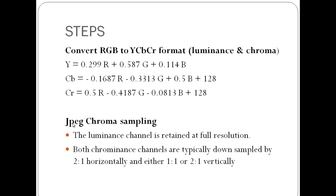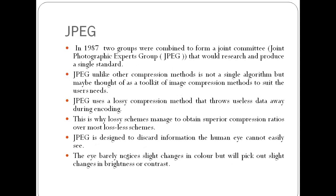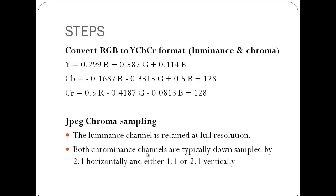Once this is done, we do the chroma sampling. The luminance channel is retained at full resolution because we are able to see the differences in brightness or contrast. But both chrominance channels are typically downsampled by 2:1 horizontally and either 1:1 or 2:1 vertically. We just retain half the samples of the Cb and Cr.